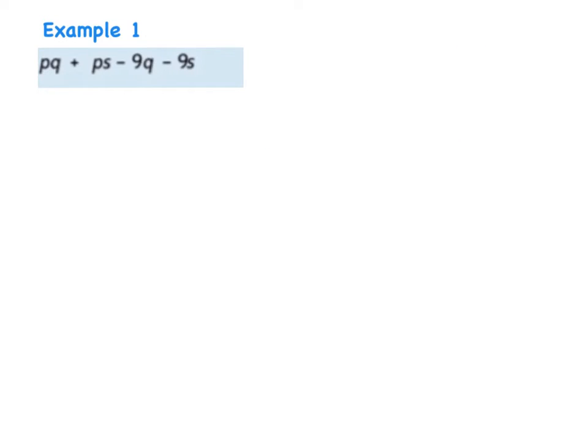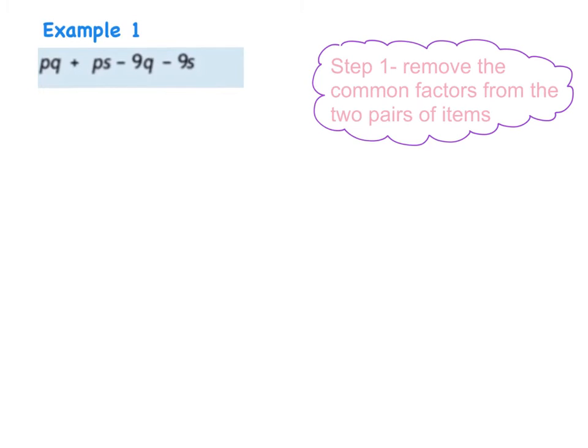Okay so example one I have here is pq plus ps minus 9q minus 9s. And step one is to select the common factors between the pairs. So at this point I'm going to see if I can spot anything that's common. And straight away here I can spot that with the pq and the ps I have a p that's common. So I'm going to take that out first of all and I will be left with q plus s.